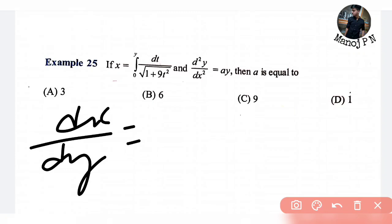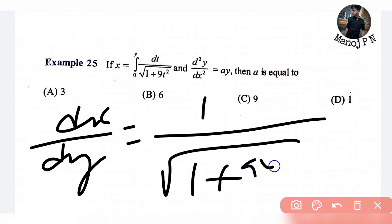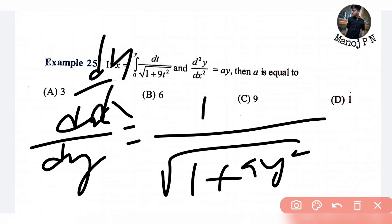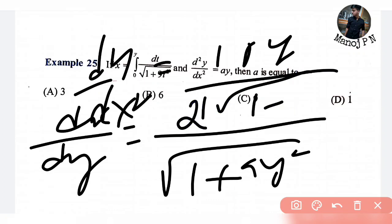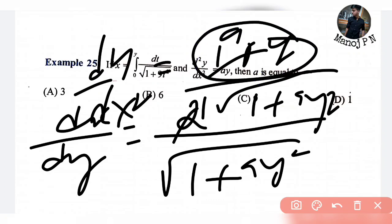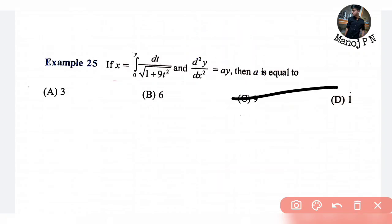If you replace t, you replace y. If you replace dt, that is the integration with respect to t — you replace dt. So we are going to differentiate: 1 divided by the square root of 1 plus 9y squared. This is dx divided by dy. You can do double differentiation with respect to y: d²y upon dx² will be equal to 18y divided by 2 times the square root of 1 plus 9y squared. That simplifies to 9y. The answer is Option C.